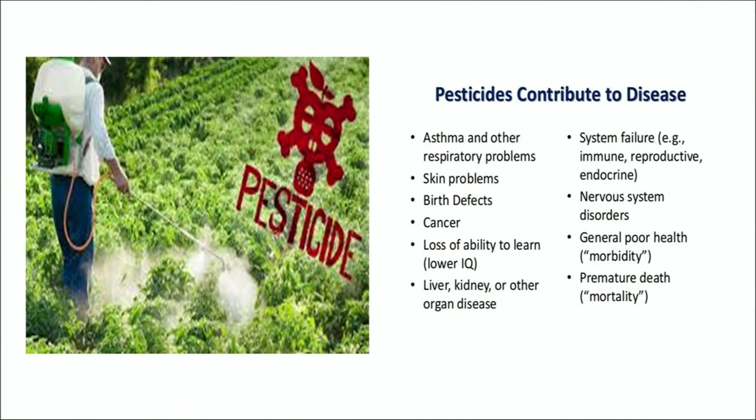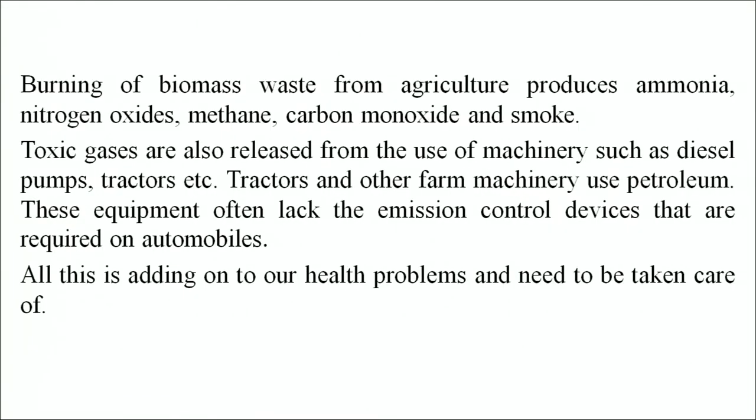Pesticides contribute to diseases like asthma and other respiratory problems, immune system failure, skin problems, birth defects, nervous system disorders, cancer, loss of ability to learn, general poor health, kidney, liver or other organ diseases, and premature death. Burning of biomass waste from agriculture produces ammonia, nitrogen oxides, methane, carbon dioxide and smoke. Toxic gases are also released from the use of machinery such as diesel pumps, tractors etc. Farm machineries use petroleum and these equipments often lack emission control devices that are required on automobiles.